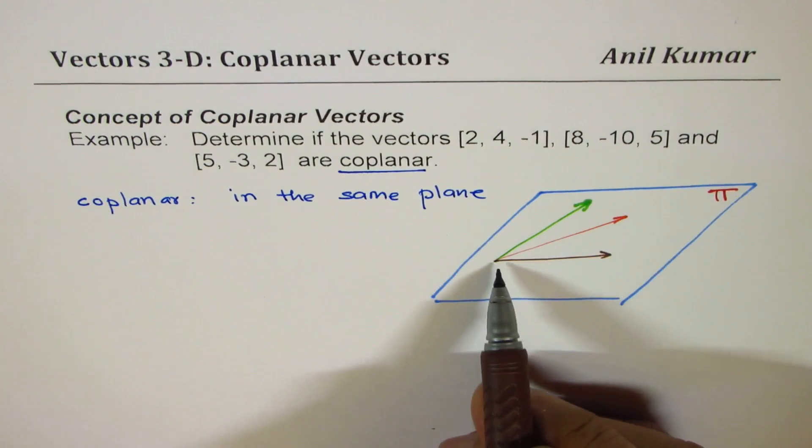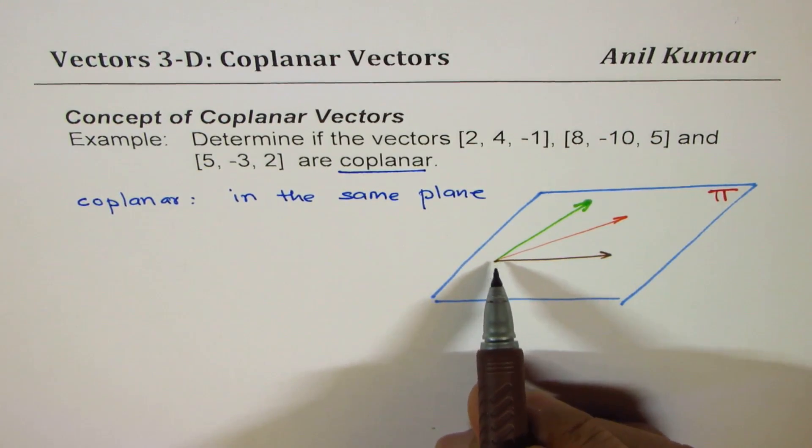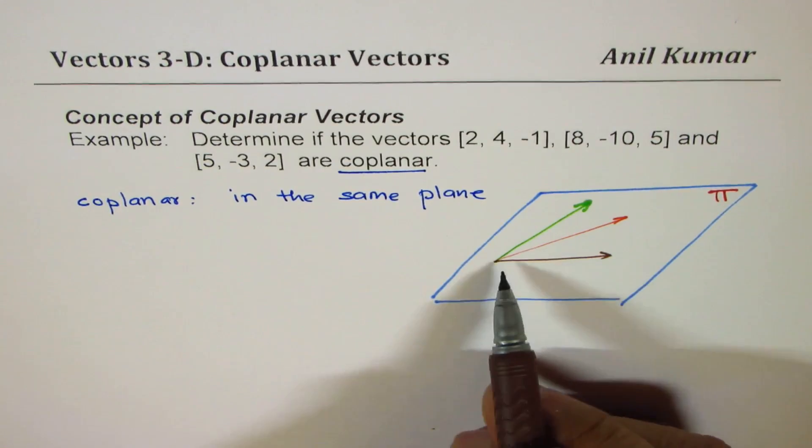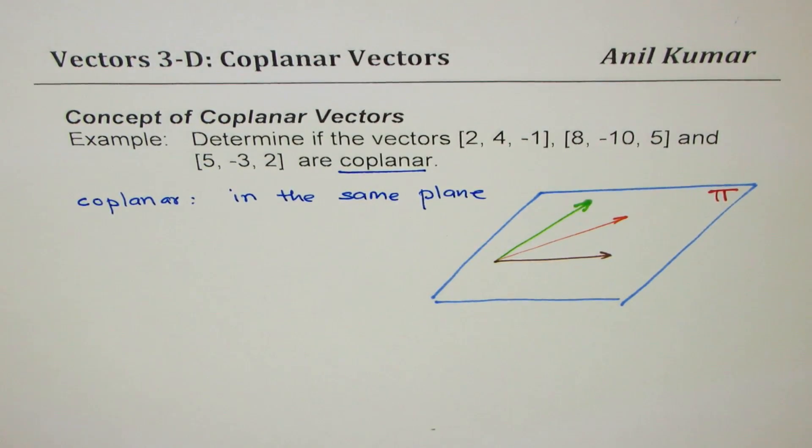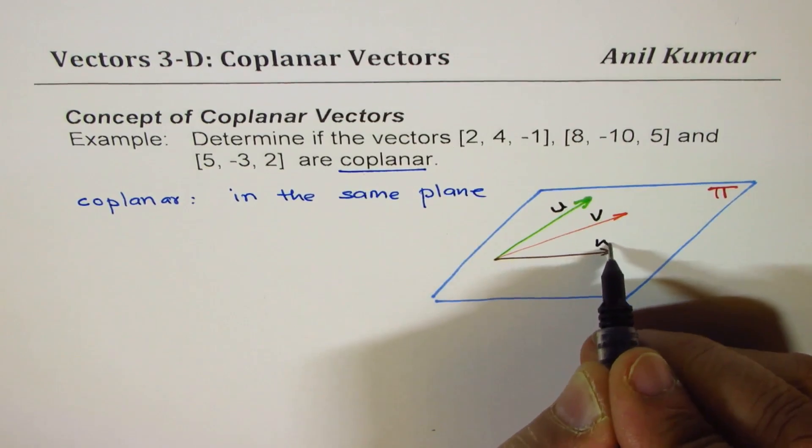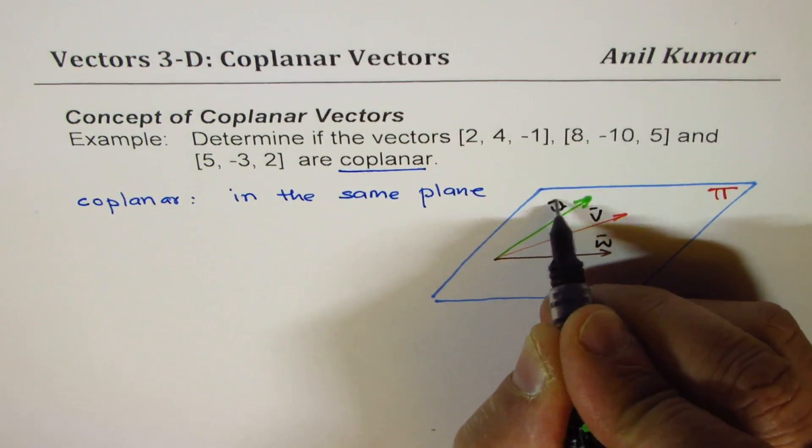Now let me draw the three vectors here. Let's say one vector is kind of like this, the other vector is kind of like this. And let me draw the third vector in a different ink. I'm purposely drawing them with the tails at a common point.